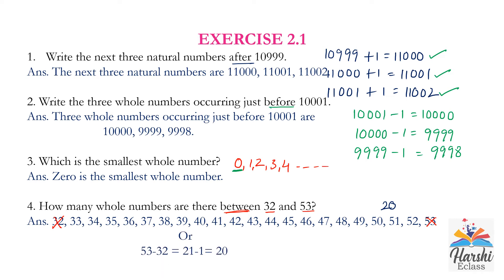So the short method is: subtract the smaller number from the greater number. That is 53 minus 32 equals 21. Then subtract 1 from that result because we are not counting 53 itself — we need only the numbers between them. So 21 minus 1 equals 20. This gives the exact count of whole numbers between 32 and 53.